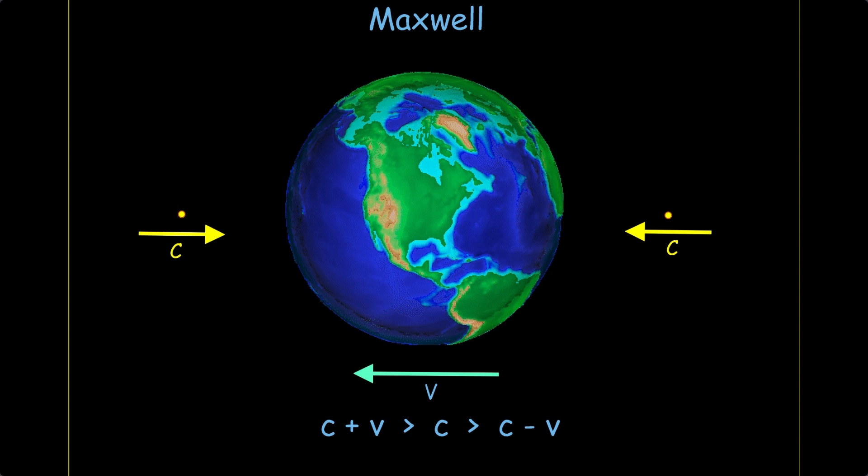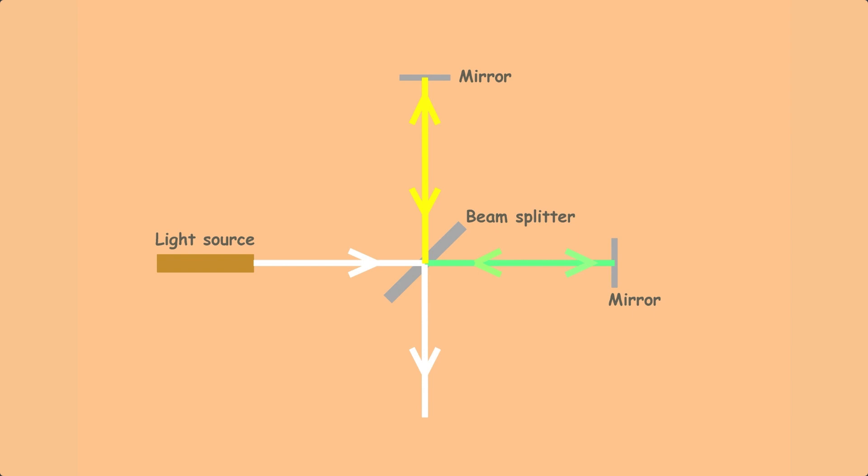This allows the speed of the Earth through the aether to be measured. The Earth, speeding through the aether at speed v, crashes into light approaching the Earth at speed c with an impact speed of c plus v. Michelson and Morley's interferometer compared this light with light coming from the side. The size of the fringe shift in the interferometer would be a measure of the Earth's velocity. There was no fringe shift.